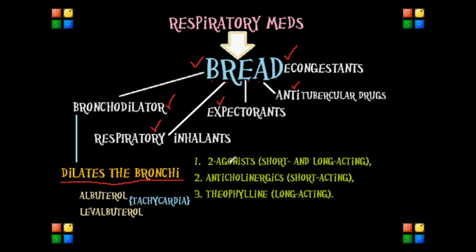The three types of bronchodilating drugs you must know for your NCLEX exam include: B2 agonists, which can be either short or long-acting; anticholinergics, which are usually short-acting; and lastly theophylline, which is long-acting.